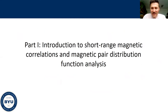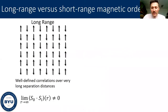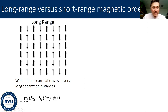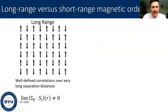Part one: introduction to short-range magnetic correlations and magnetic pair distribution function analysis. Just to set the stage, we spend a lot of time talking about long-range order in materials — the magnetic structure, usually referring to the long-range pattern of magnetic moments that have a well-defined correlation over very long separation distances. We could think of looking at some arbitrary spin S₀ and its correlation with some other spin Sᵢ a distance R away. In the limit of ideal long-range order, this remains non-zero even at infinite distances.